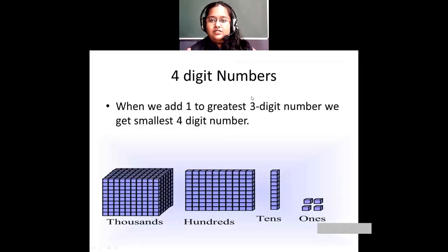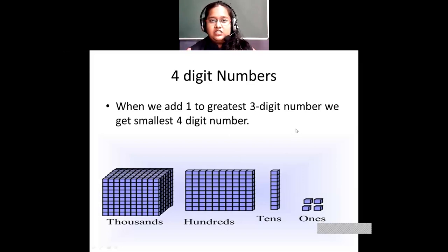Then we saw what's a four-digit number. Whenever we add one to the greatest three-digit number — the greatest three-digit number is 999 — when I add one to it, I get the smallest four-digit number, which is 1,000.